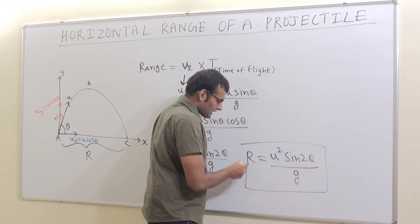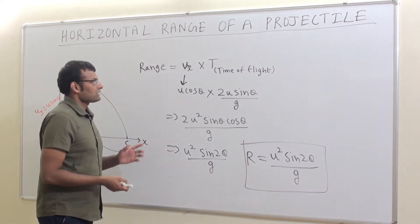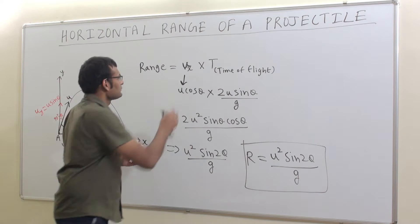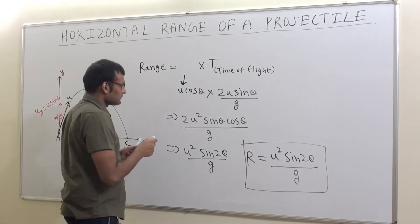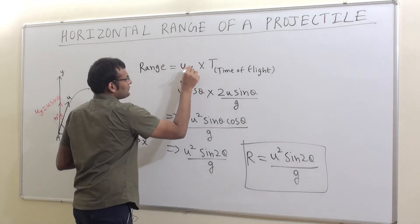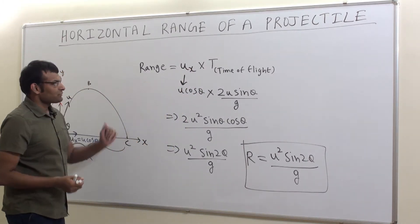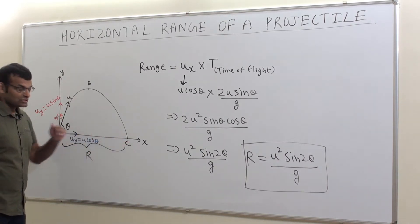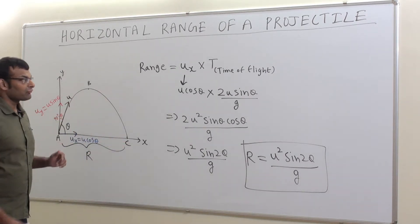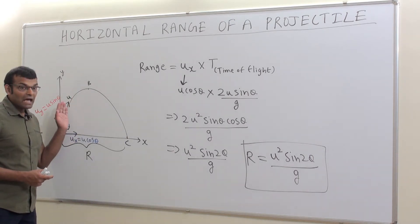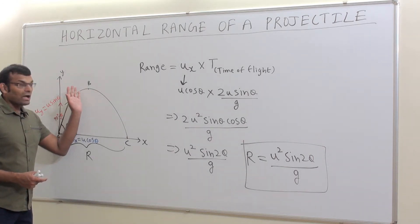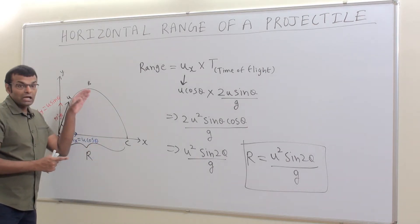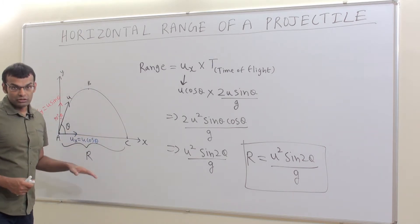R = u² sin2θ / g is the range of a projectile motion. Range is the displacement: ux is the velocity of the ball in the horizontal direction and t is the time of flight. We use the time of flight because the time taken by the ball to travel from A to C is exactly the time of flight, giving us the horizontal range.